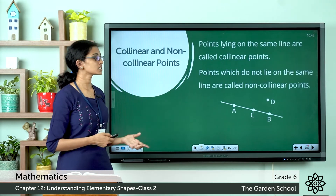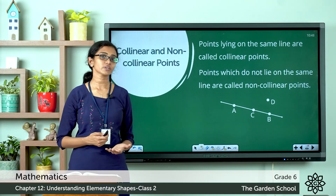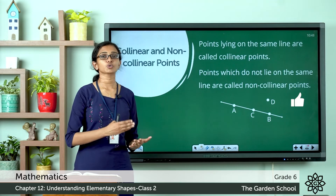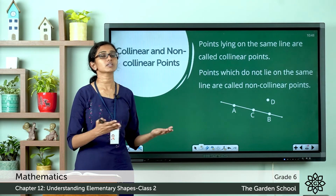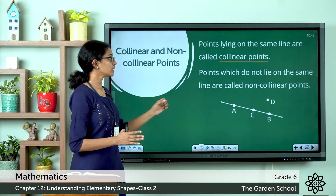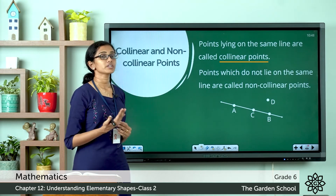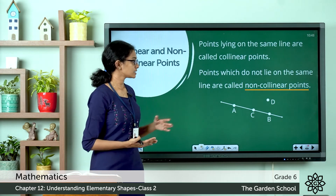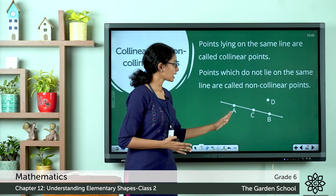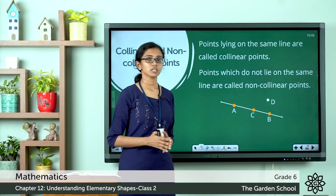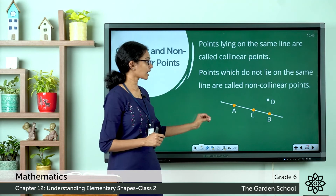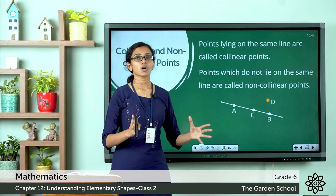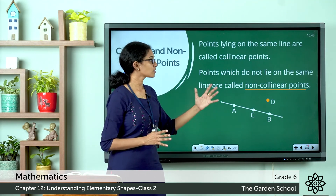We have also learned that we can mark infinite points on a line. Points which lie on the same line are called collinear points, and points which do not lie on the same line are called non-collinear points. Here you can see an example: points A, C, and B all lie on the same line, so they are collinear points. Point D is not on the line, so it is a non-collinear point.